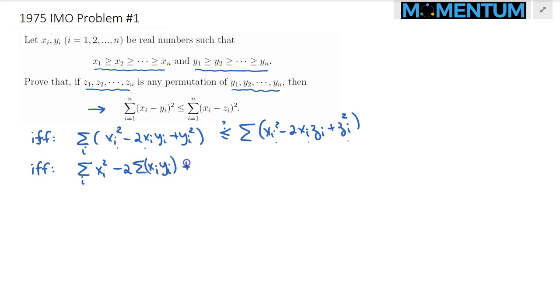And then plus summation of y sub i squared over all i. And still something we need to prove, summation over all i, x sub i squared minus 2 summation x sub i z sub i plus summation of z sub i squared over all i.